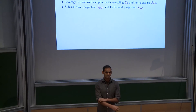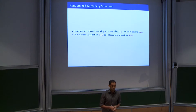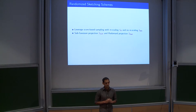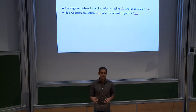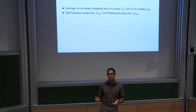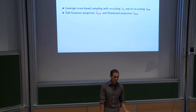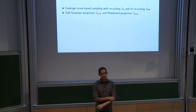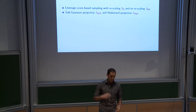Now I'll talk about what sketching schemes are actually used in practice. There are two classes of randomized sketching that are very common — there are also some deterministic schemes, but randomized sketching generally works well computationally. One is based on sampling — in particular leverage score sampling — and the other approach that's widely used is random projection: for example if S is a random Gaussian or Bernoulli matrix, or a Hadamard projection.